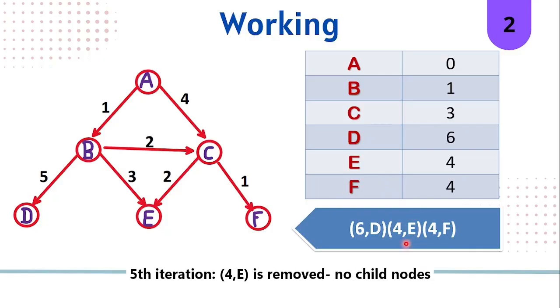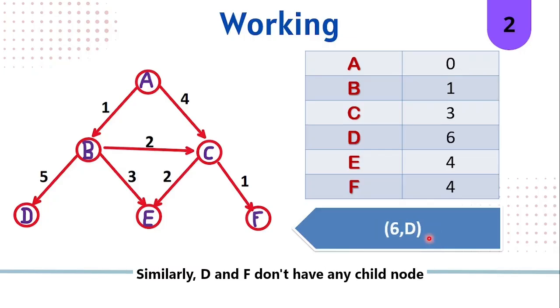Next, 4E will be removed from the priority queue. Since 4E is not having any child, we'll get nothing out of it. Similarly for 4F and 6D. In the end, when the priority queue will get empty, the algorithm terminates.